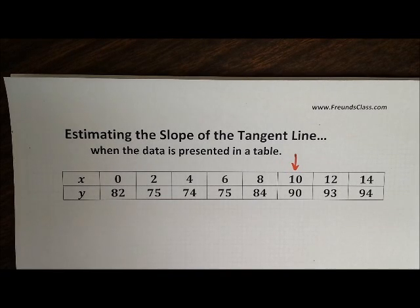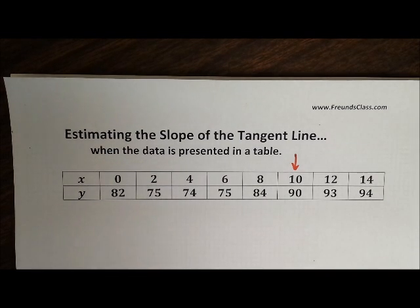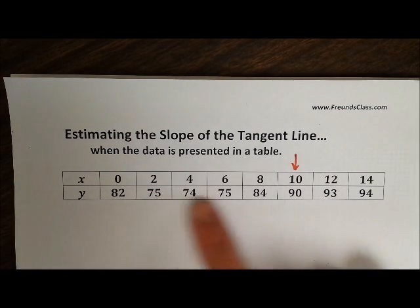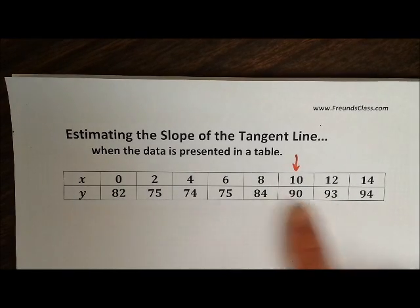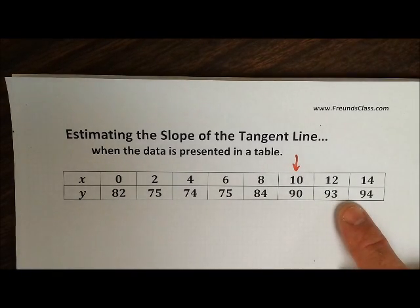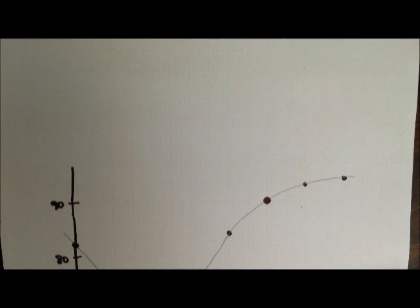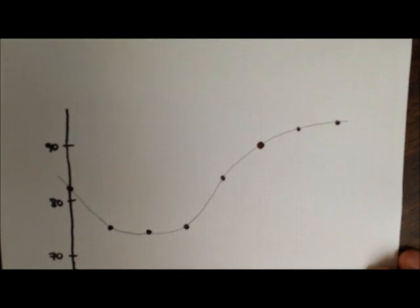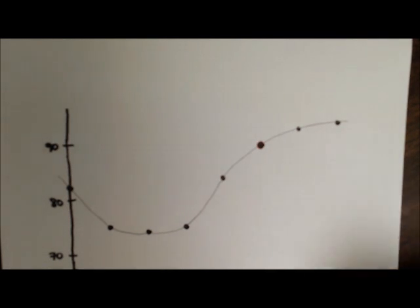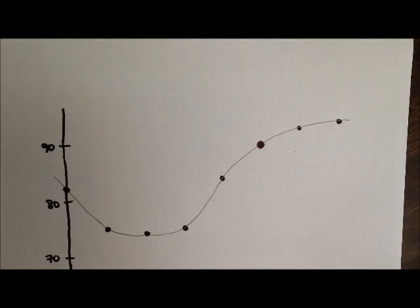This video will demonstrate how to estimate the slope of the tangent line to a curve when the data is presented in a table. We have some tabular information here, and I've graphed it just so we can get a visual of what's happening. When you actually do this on homework, a test, or quiz, you won't have to draw a graph — though it always helps to get a visual for what we need to find.